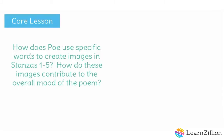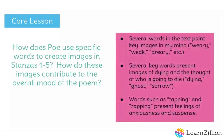First, I want to review the original question — what was it that I was trying to find out from the text? How does Poe use specific words to create images in stanzas 1 through 5? How do these images contribute to the overall mood of the poem? To help me answer this, I have my key details from the text and my notes. First, several words in the text such as weary, weak, and dreary paint key images in my mind. Second, several key words present images of dying and the thought of who is going to die — dying, ghost, and sorrow as examples. Because the reader is constantly wondering about who may die or the cloud of darkness surrounding the poem, there is an overall sense of mystery. Lastly, words such as tapping and rapping present feelings of anxiousness and suspense as the reader is unsure of what is to come.